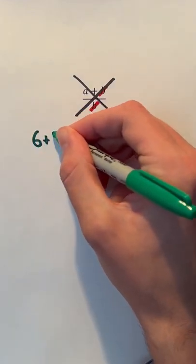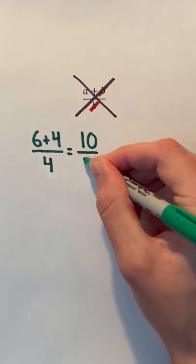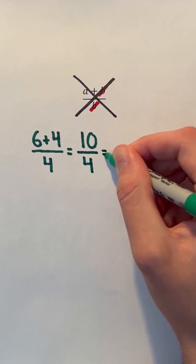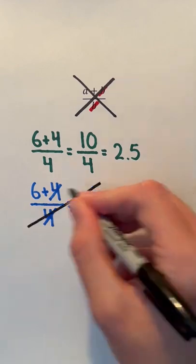Let's say we have 6 plus 4 over 4. If we simplify, we will add 6 and 4 to get 10, and then divide 10 by 4 to get 2.5. If we just crossed out the 4's, we would end up with 6, not 2.5.